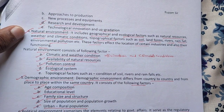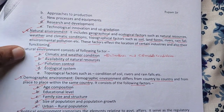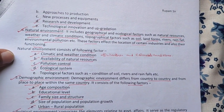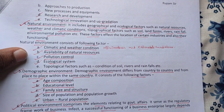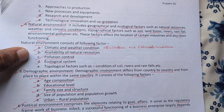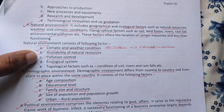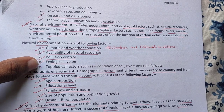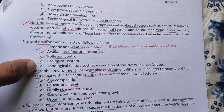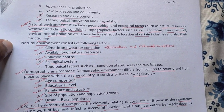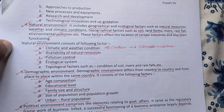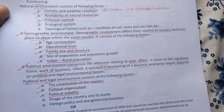The fourth is the natural environment. The natural environment consists of the following factors: climatic and weather conditions, availability of natural resources, pollution control, ecological system, and topographical factors such as condition of soil, rivers, and rainfall.